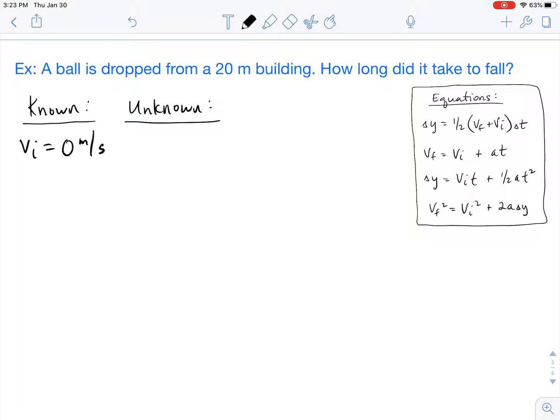It's dropped from a 20 meter height building, so that's going to be our delta y and since it falls downwards we're going to make it negative. And because this is a free fall problem as the object falls the acceleration is due to gravity, so the acceleration is going to be negative 9.8 meters per second squared.